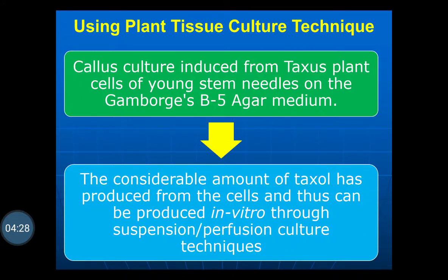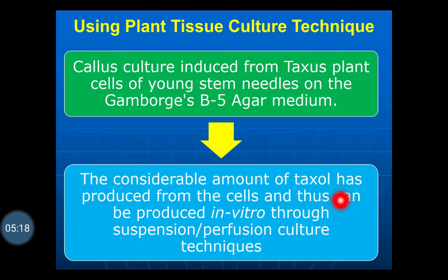Another method is the use of plant tissue culture technique. In this case, callus culture is induced from the Taxus plant cells of young stem needles on Gamborg B5 agar media. A considerable amount of taxol is produced into the cell. After sufficient growth, taxol produced from the cells can be produced in vitro through suspension or perfusion culture technique.